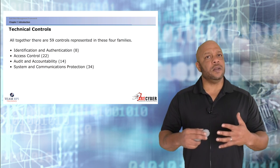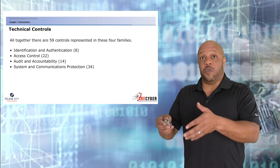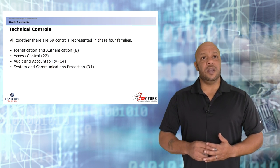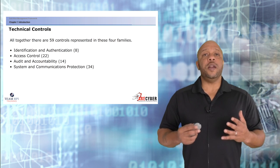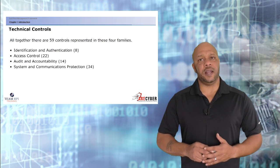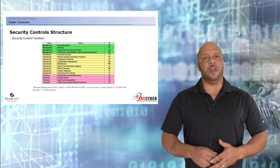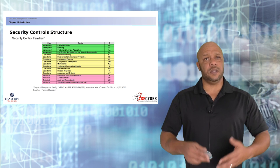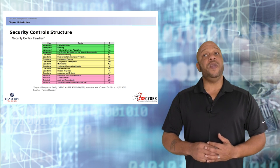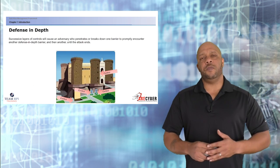Within the technical control family, altogether there are 59 controls represented in these four core families: identification and authentication, access control, audit and accountability, and system and communications protection. You can clearly see the class represented in the first column — management, operational, or technical — the long name or base name of the control family, and then the two-letter identifier. We'll get into more of that later.